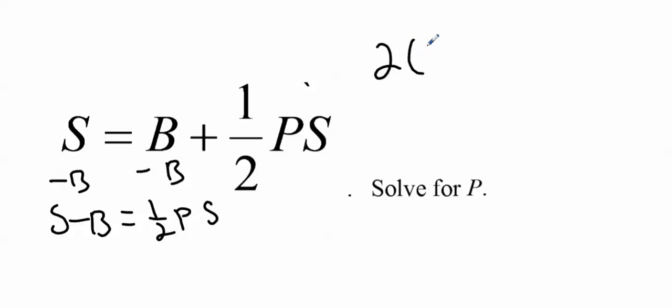So I have 2 times S minus B equals PS. Next thing I want to do, divide by S, so I have 2(S minus B) divided by S, and that's equal to P. That one seems a little weird, you really want to try to knock these guys out and cross them off, but you can't, because they're separated by that minus sign. So it's reduce factors, not terms.